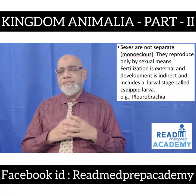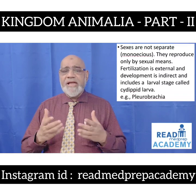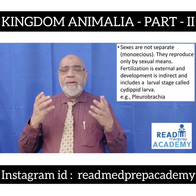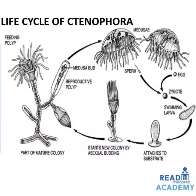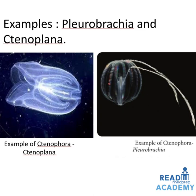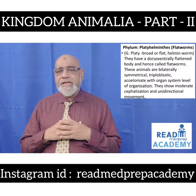Sexes are not separate — they are monoecious. They reproduce only by sexual means; fertilization is external, and development is indirect, including a larval stage called the cydippid larva. Example: Pleurobrachia. In the life cycle of Ctenophora, the feeding polyp forms a mature colony with medusa head and reproductive polyp, which develops into medusa. The male produces sperm and the female produces eggs; they fertilize to form a zygote, then a swimming larva that attaches to the substrate and develops into a new colony by asexual budding. Examples: Ctenoplana and Pleurobrachia.